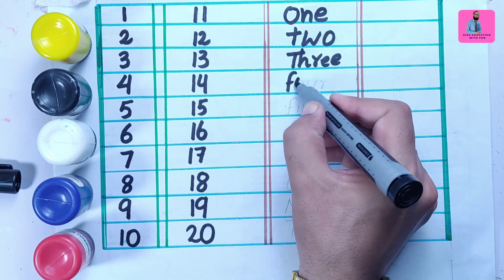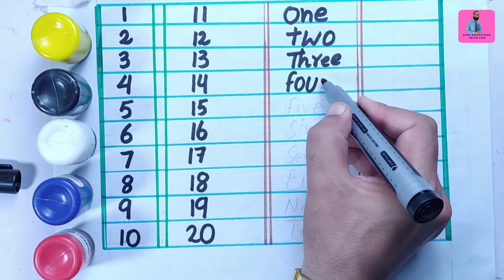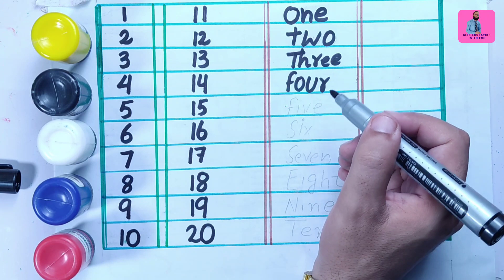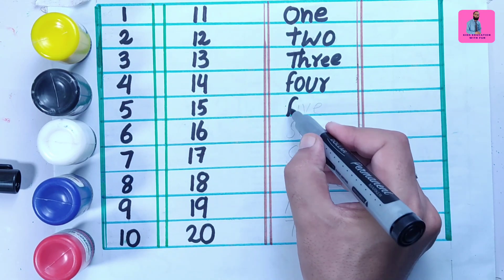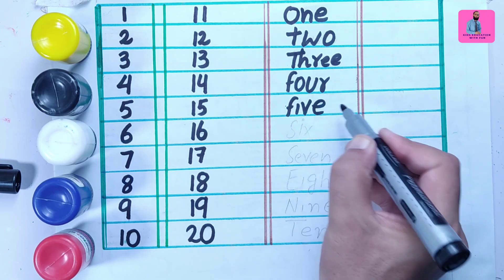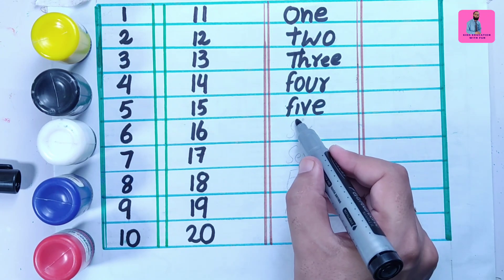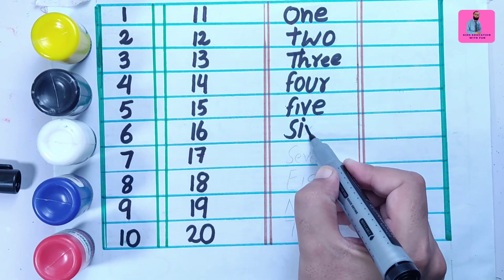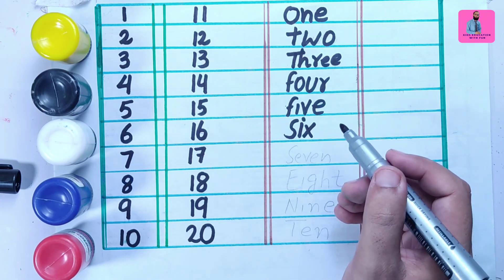F, O, U, R. Four. F, I, V, E. Five. S, I, X. Six.